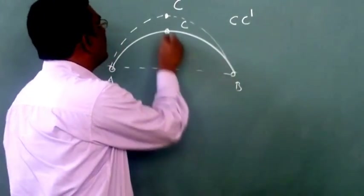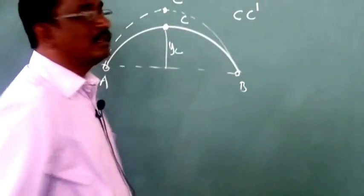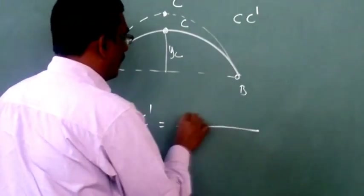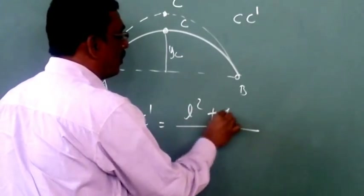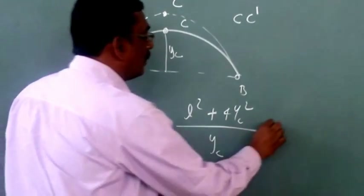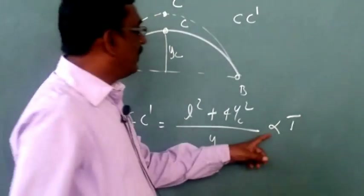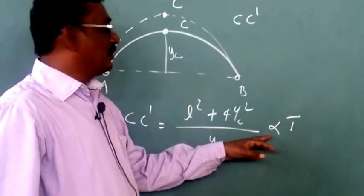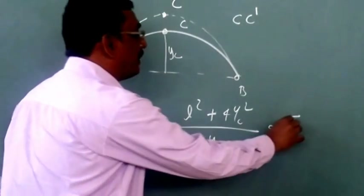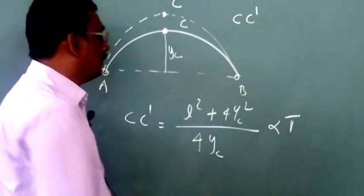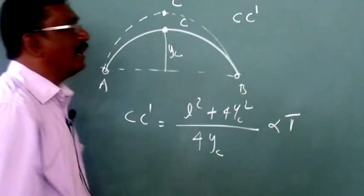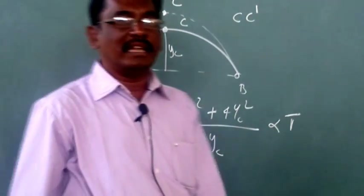This is the rise of the arch, and this is the change in rise. This change in rise may be given by: (L² + 4·yc²) / (4·yc) × α·T, where α is the coefficient of thermal expansion and T is the change in temperature. We can find the increase in rise (y) in case of three-hinged arches using this formula.